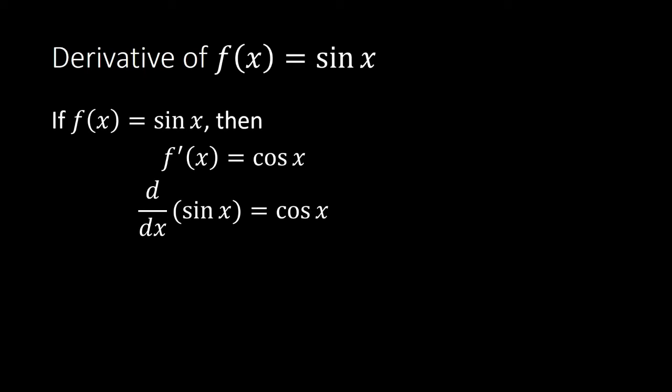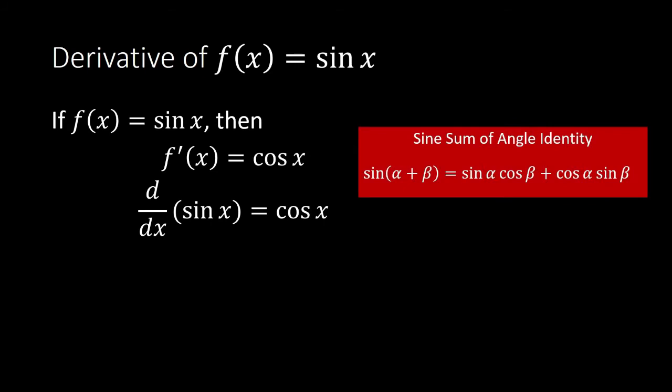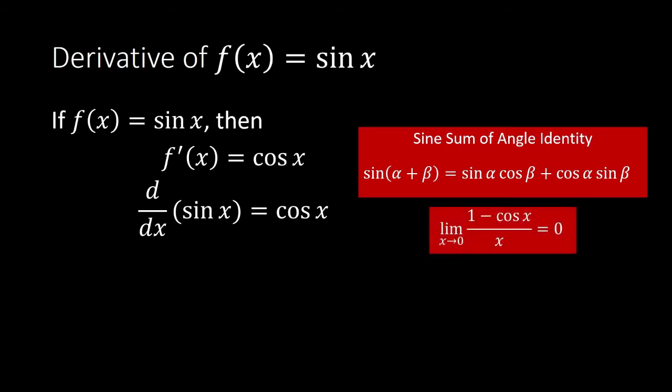We will prove this using our limit definition of the derivative, but we will need the following identities. First, the sine sum of angle identity — you met this in pre-calculus when you studied circular functions. The sine of alpha plus beta is equal to sine of alpha times cosine of beta, plus cosine of alpha times sine of beta.